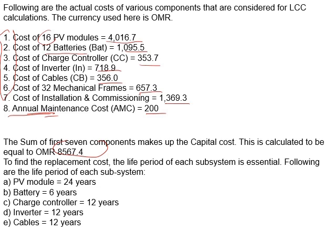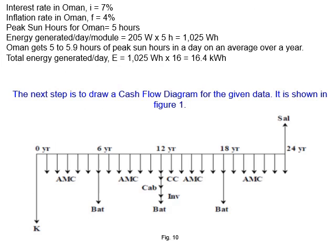The PV will work for up to 24 years. Batteries last six years, so every six years we need to change them. Charger controller, inverter, and cable work for 12 years, so every 12 years we need to change them. The interest rate in Oman is 7% and inflation rate is 4%. Five hours is the sun peak hours in Oman. We are asked to find the life cycle cost and the cost of energy.